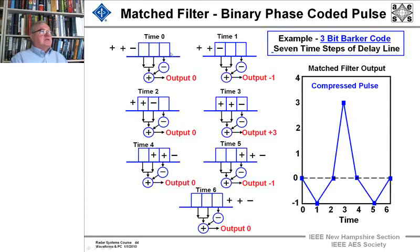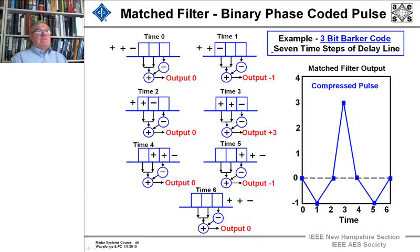What we do is we take a pulse and divide it up into three pieces. What do I mean by a 3-bit Barker code? I mean that we divide the time up into three sub-pulses. The Barker codes have a specific characteristic: they have uniform side lobes. And that's why Barker got his name attached to them.